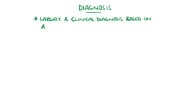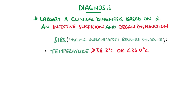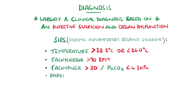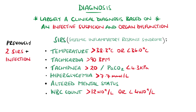Overall, it is a clinical diagnosis based on the presence of an infection and organ dysfunction. The SIRS criteria, or systemic inflammatory response syndrome criteria, were previously used, requiring two or more criteria such as a temperature above 38.3°C or below 36°C, tachycardia, tachypnoea, hyperglycaemia without diabetes, altered mental status, or a high or low white blood cell count. However, more recently there has been a shift away from these criteria and instead towards using the SOFA score, which stands for sequential organ failure assessment.